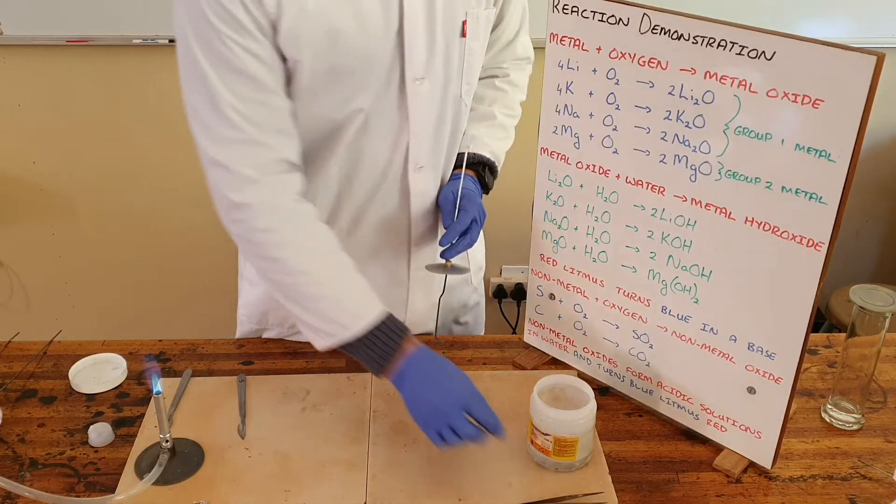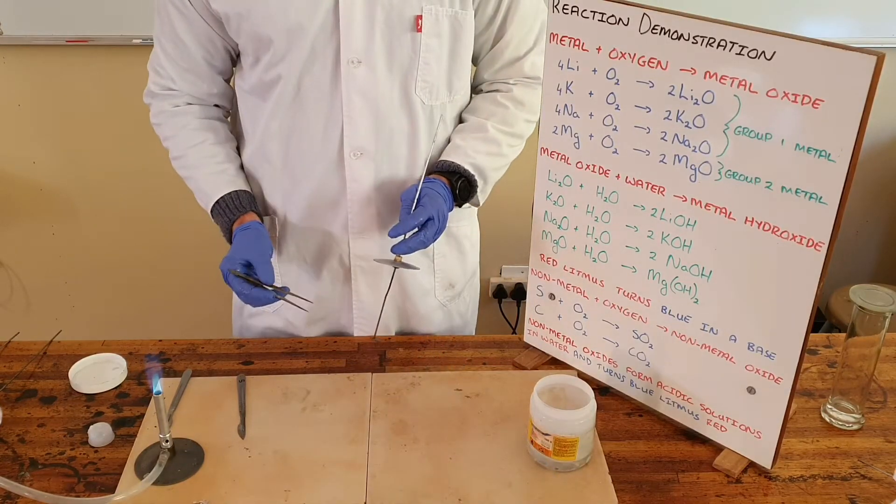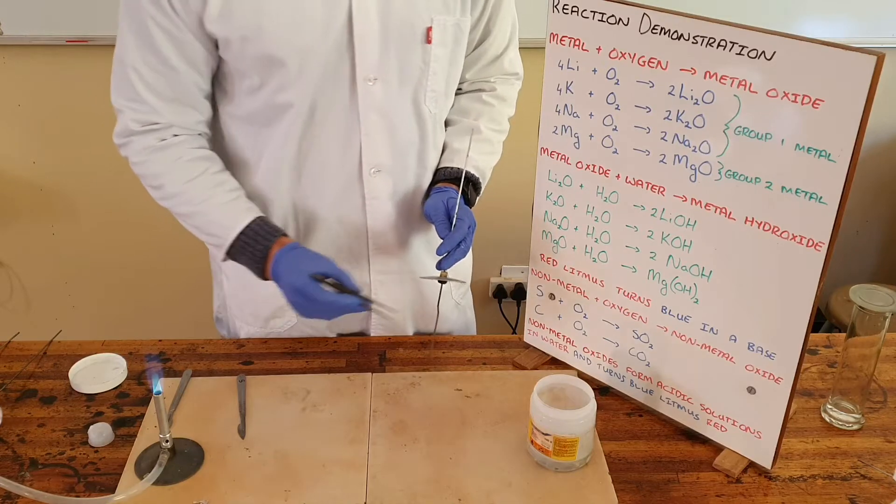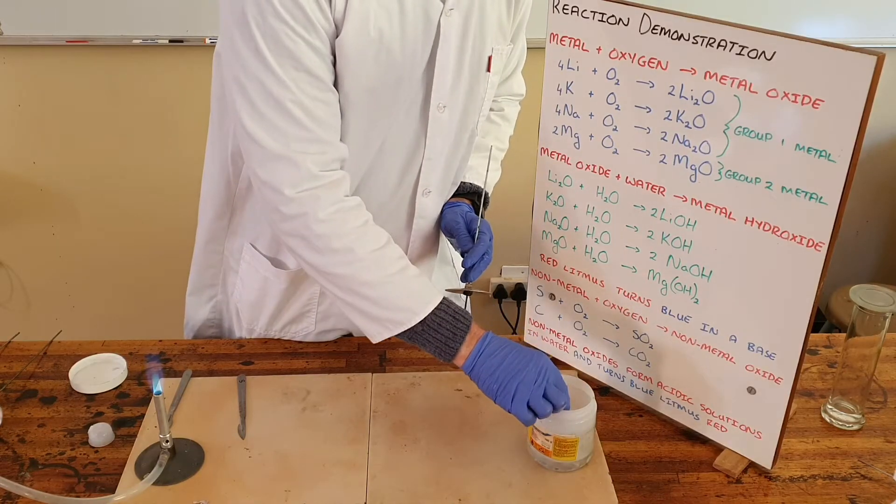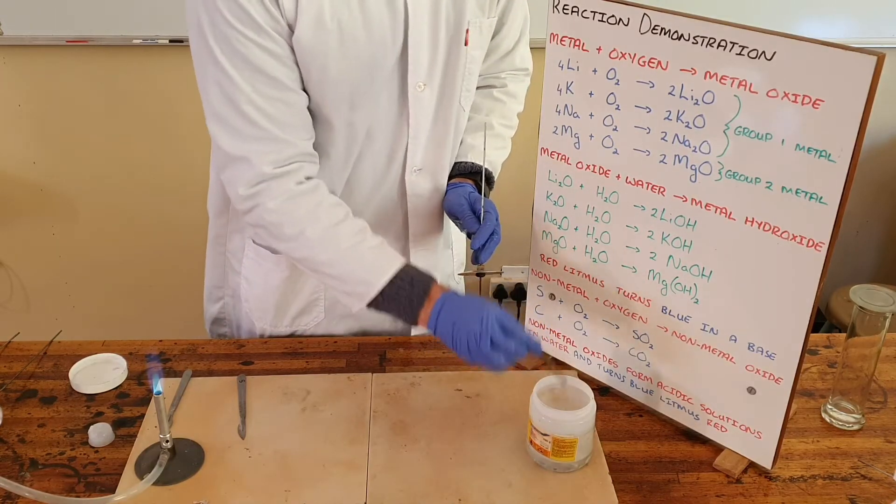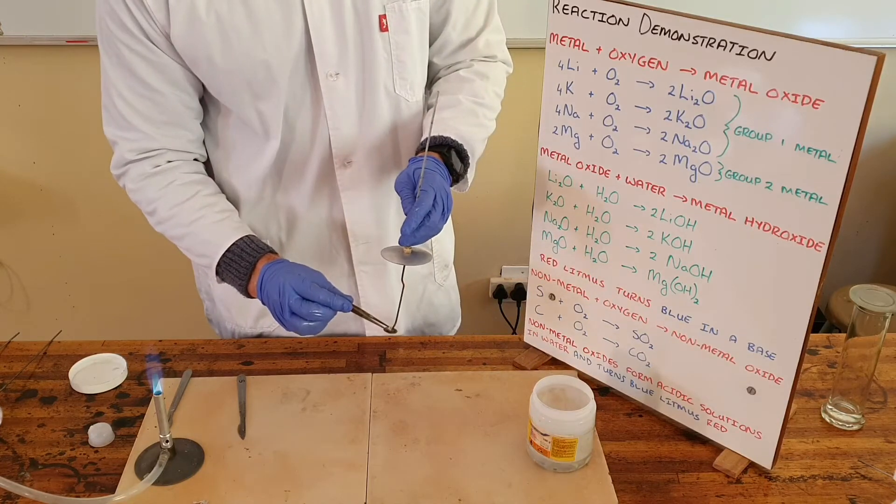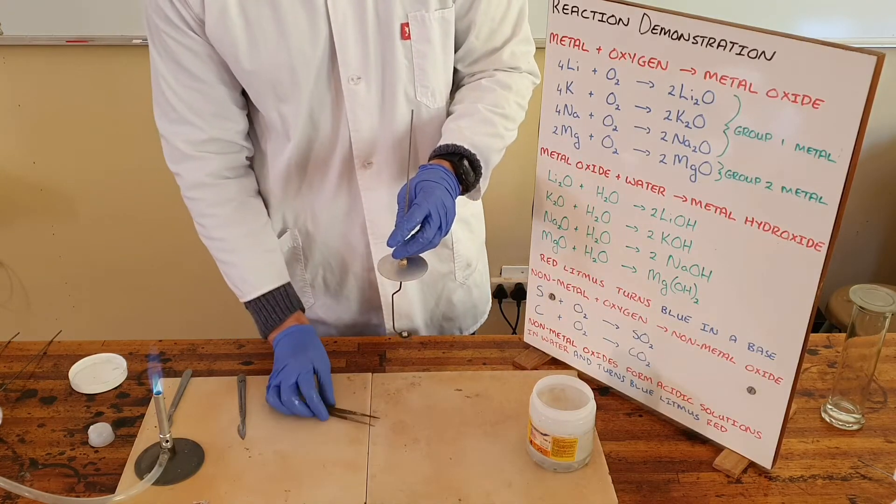A further demonstration of a metal reacting with oxygen can be done with potassium, which is another group 1 element which must be stored in paraffin as it is very reactive with water vapor and moisture in the air.